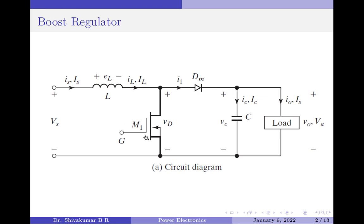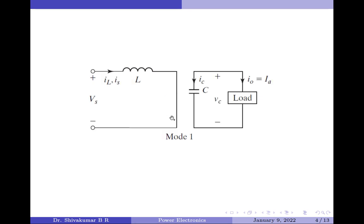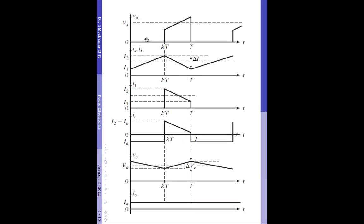In mode 1, the transistor switch is turned on at time t equals 0 for an overall duration of t1 seconds. The equivalent circuit for mode 1 is shown here. You can see the MOSFET is on and the diode is off. Since the MOSFET is on, the voltage across it is ideally 0, as shown in the waveform here. You can see between 0 to t1, where t1 equals K times capital T, the voltage across the MOSFET terminals is 0.